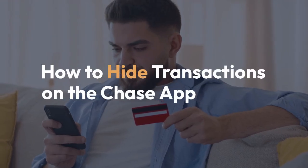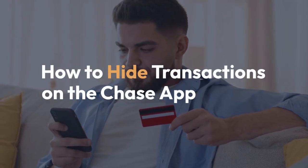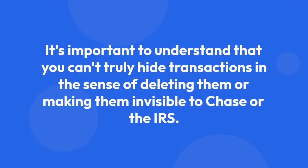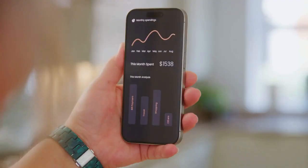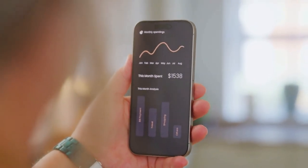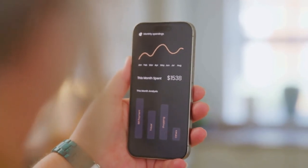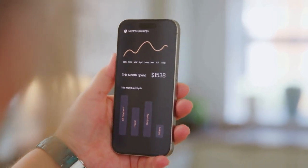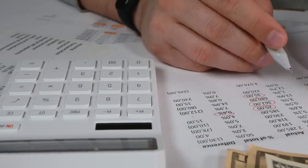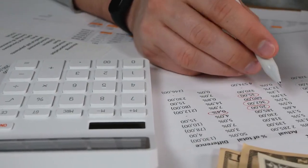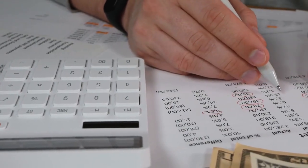We're going to explain how to hide transactions on the Chase app, but it's important to understand up front that you can't truly hide transactions in the sense of deleting them or making them invisible to Chase or the IRS. What you can do is manage how they are displayed and categorized within the Chase app for your own convenience. There are several ways to achieve this level of organization.